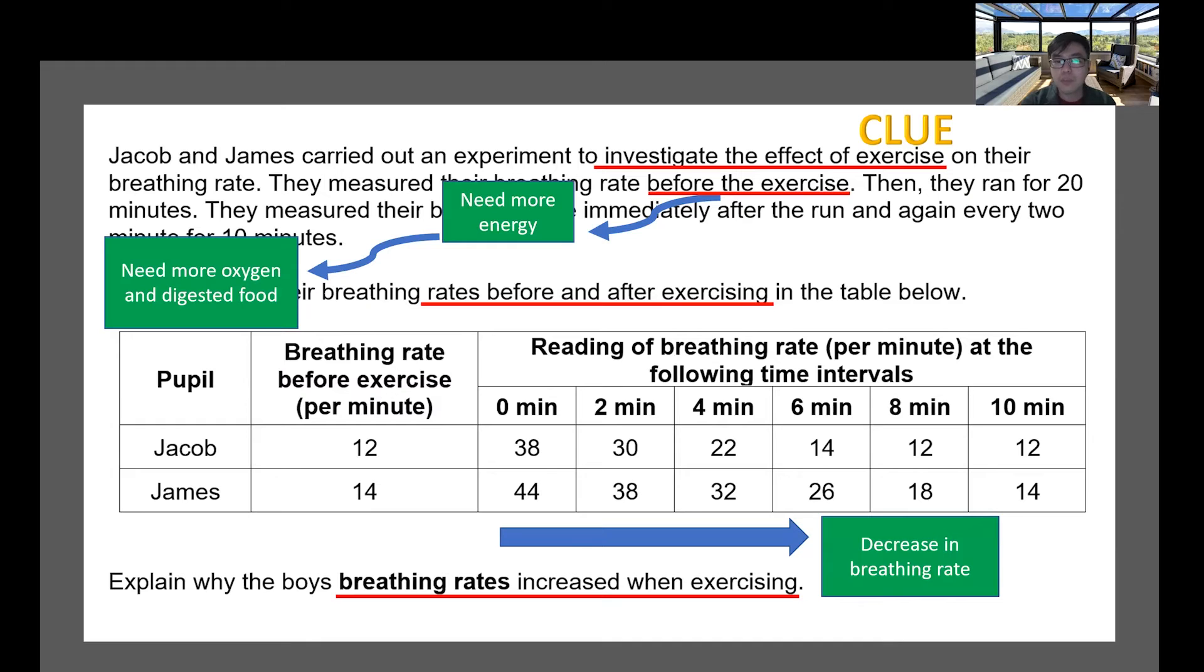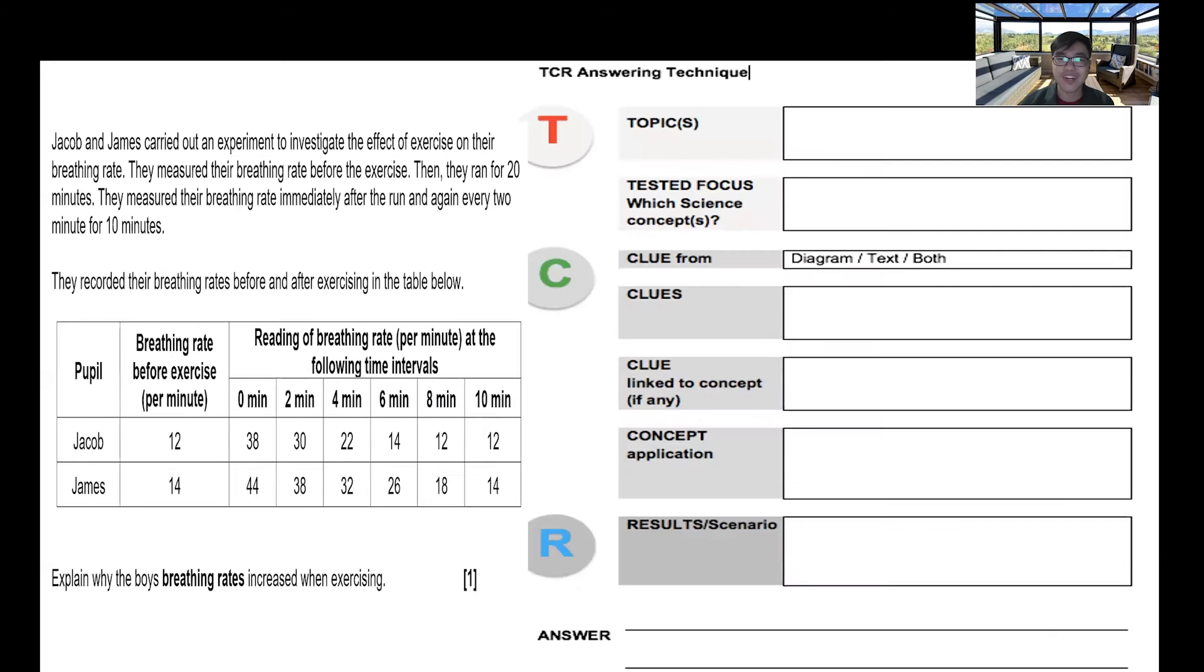At the same time, let's take a look at the table. As you can see, it decreased in the breathing rate. From here - zero minutes, two minutes, four minutes, six minutes - the breathing rate actually decreases. That is what we analyze from the table.